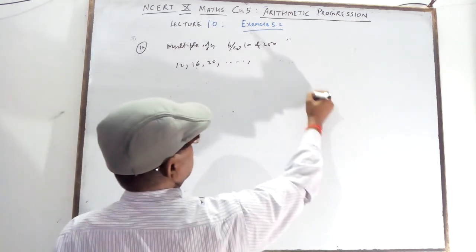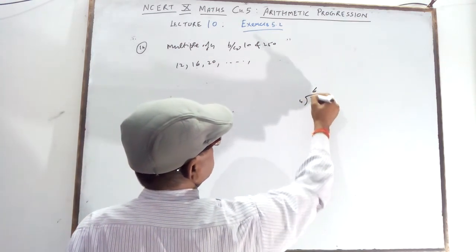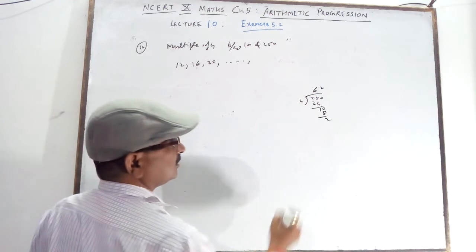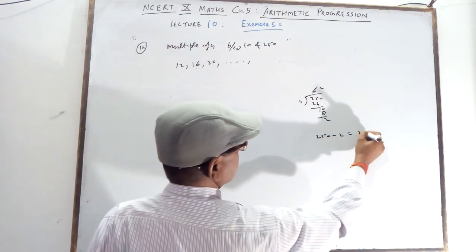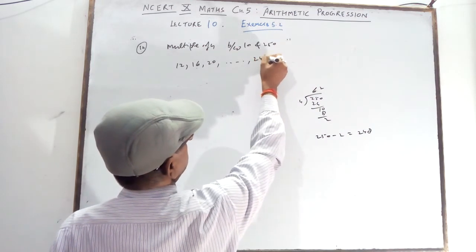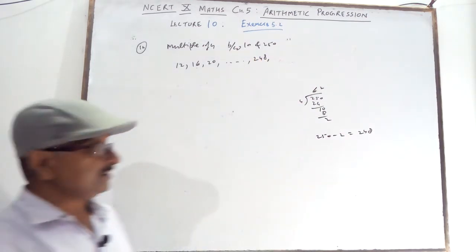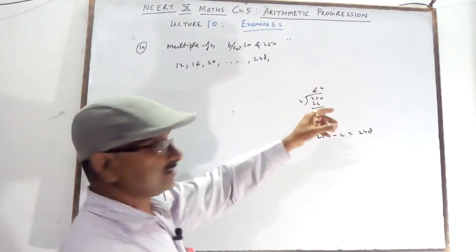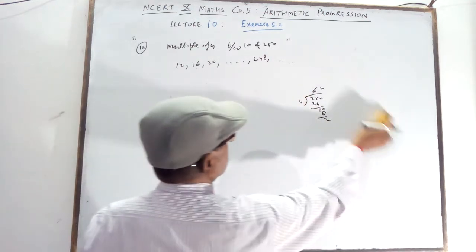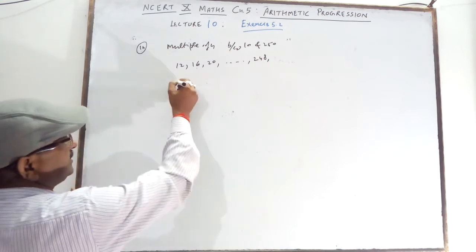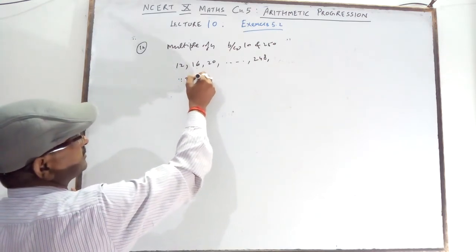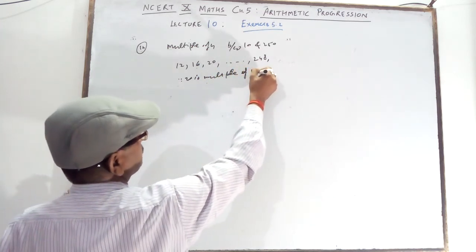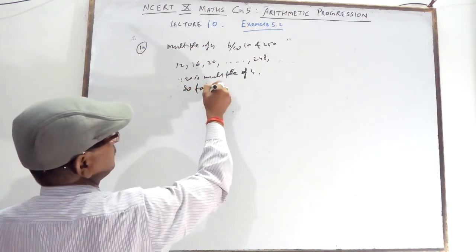For the last multiple of 4 below 250: divide 250 by 4, the remainder is 2. So 250 minus 2 gives 248. The last multiple of 4 before 250 is 248. Since these are multiples of 4, they form an AP.